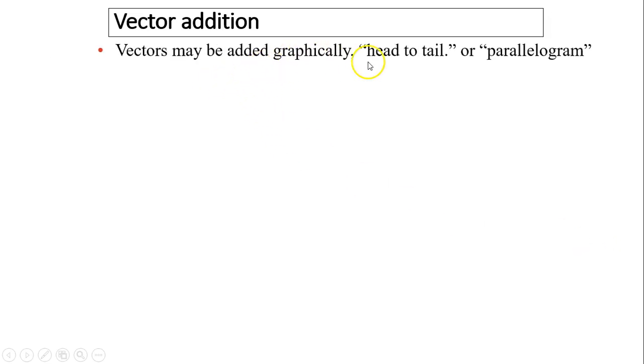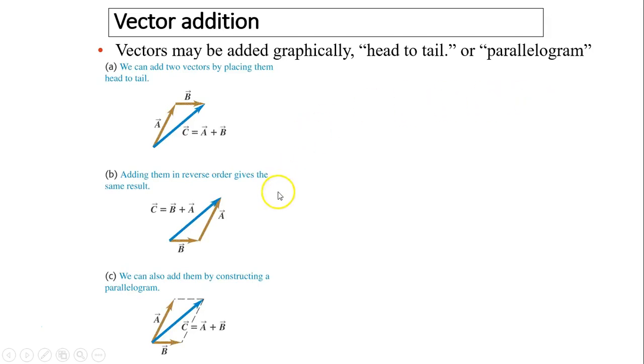Vectors may be added graphically. Head to tail. Sometimes we call it tip to tail. Or we can use parallelogram. Here are two vectors, A and B. So to find the resultant, we go from the starting, the tail of A to the tip of B. That is your resultant. We add two vectors by placing them head to tail. The resultant is not head to tail. The resultant is from the beginning to the end. Adding them in reverse order gives the same result.